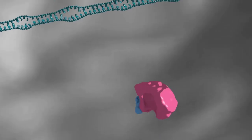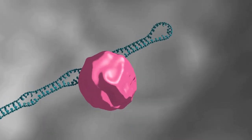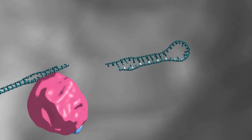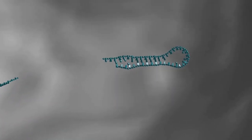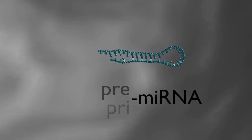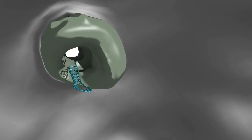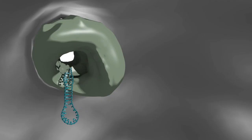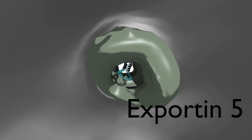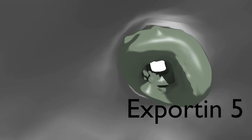This complex performs a cleavage reaction that removes the 5' and 3' extension and liberates a 60-70 nucleotide transcript known as a pre-microRNA. The pre-microRNA generated by the microprocessor complex is recognized by a nuclear export factor called exportin-5, which transports the pre-microRNA to the cytoplasm for subsequent processing.